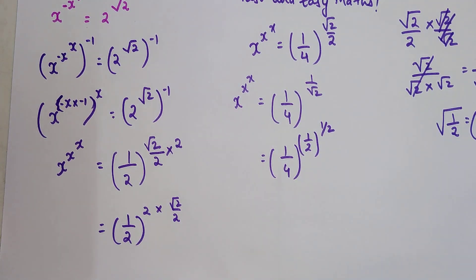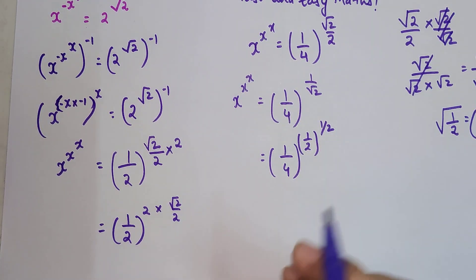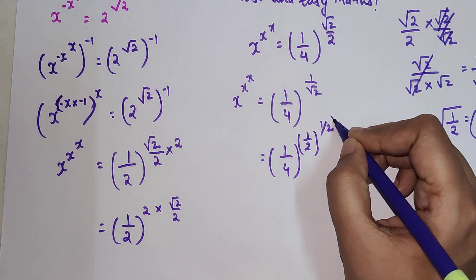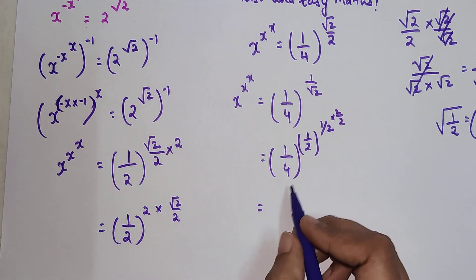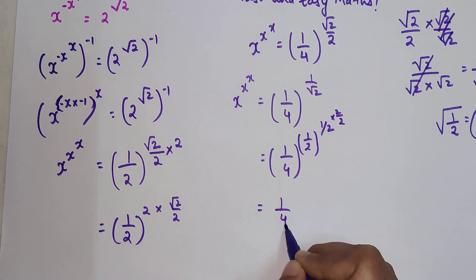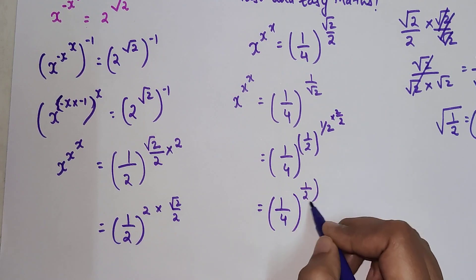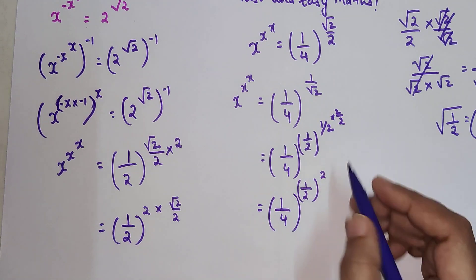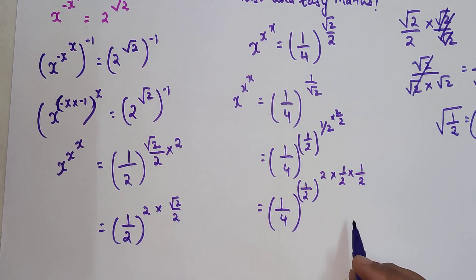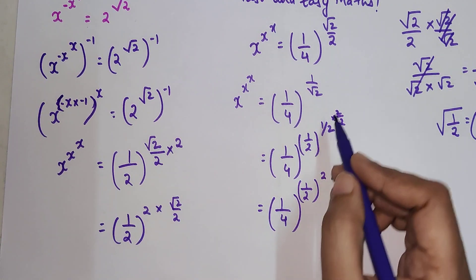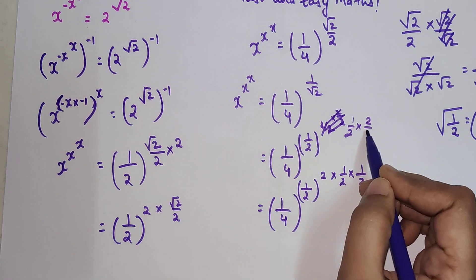But in order to find the value of x raised to x raised to x, we need to have all of these values the same. So here also I will multiply by 2 and divide by 2. So I will get 1 upon 4 the whole raised to 1 upon 2 the whole raised to 2 into 1 upon 2 multiplied by 1 upon 2.